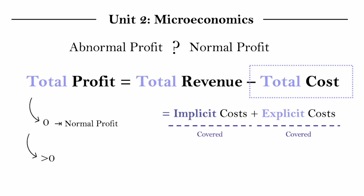And this level of profit beyond the normal level of profit that justifies a firm's existence is called abnormal profit.